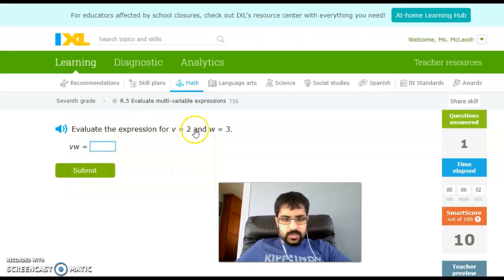Evaluate for v equals 2, w equals 3. Once again, I've got two numbers being multiplied together because they're next to each other. So before I show you the answer, go ahead and solve it in your head. 2 times 3 gives me 6.